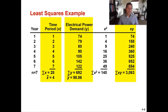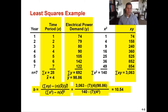Now we have all the data points needed to calculate the slope. Plugging into the slope formula: the sum of xy is 3063, n is seven, x-bar is four, y-bar is 98.86, the sum of x-squared is 140, n is seven, and x-bar squared is four squared. When you do this calculation, you get b equals 10.54. So the slope of your line is 10.54.